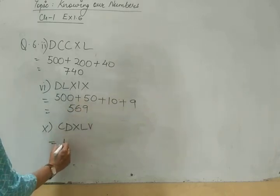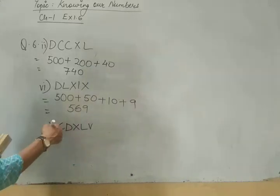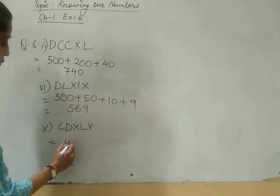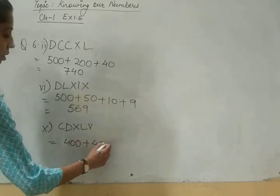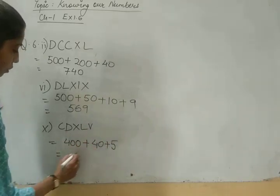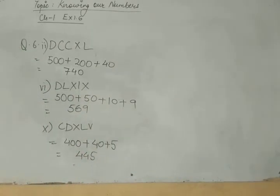For CD, it is D minus C. We will write 400 plus XL means 40 plus 5. 445. You have to write it in Hindu Arabic.